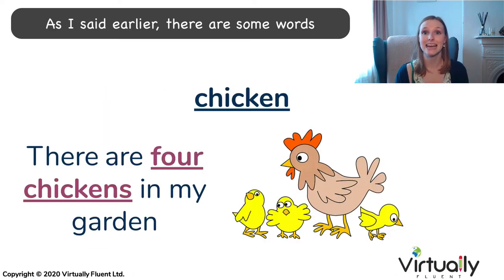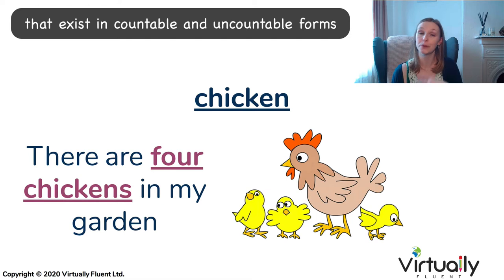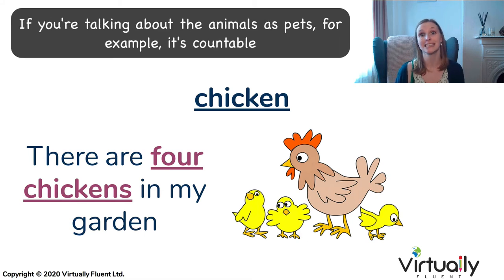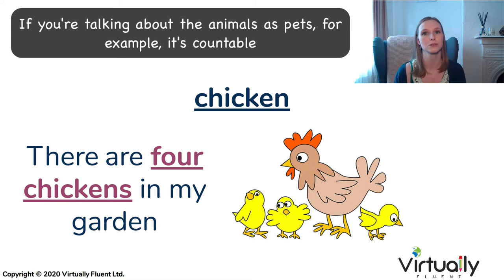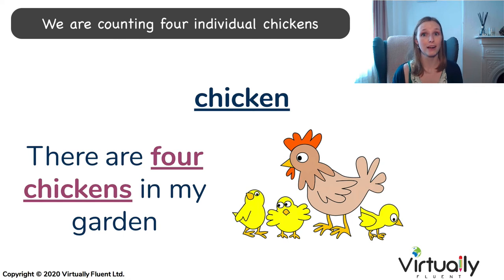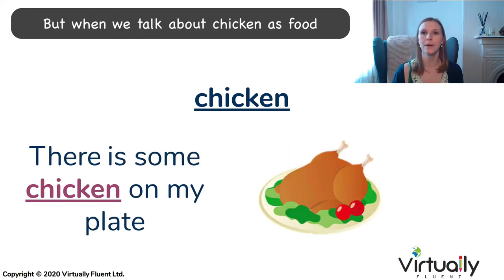As I said earlier, there are some words that exist in countable and uncountable forms. Let's take the example word 'chicken.' If you're talking about the animals as pets, it's countable. For example, there are four chickens in the garden — we are counting four individual chickens.